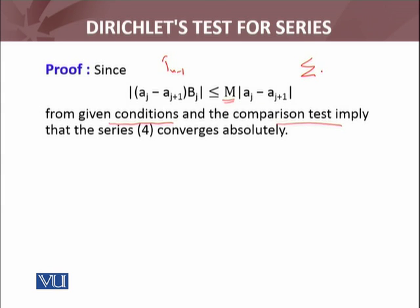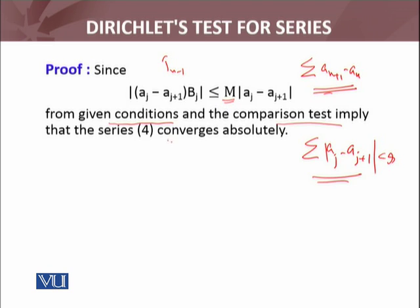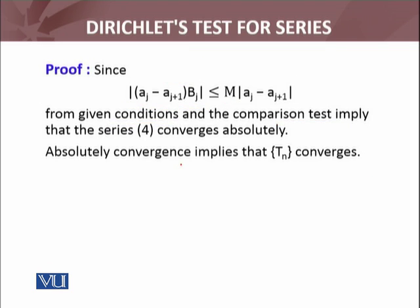Since summation of |aₙ₊₁ − aₙ| is absolutely convergent, it means summation |aⱼ − aⱼ₊₁| is absolutely convergent and less than infinity. Now M is some finite real number, so the comparison test applies. The series Tₙ₋₁ which was the sequence of partial sums — this series is convergent and converges absolutely. Absolute convergence implies convergence; we had stated and proved that result: if summation aₙ is absolutely convergent, then summation aₙ is convergent. Applying that result, Tₙ converges.